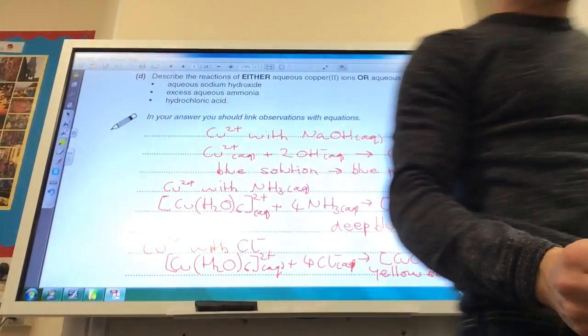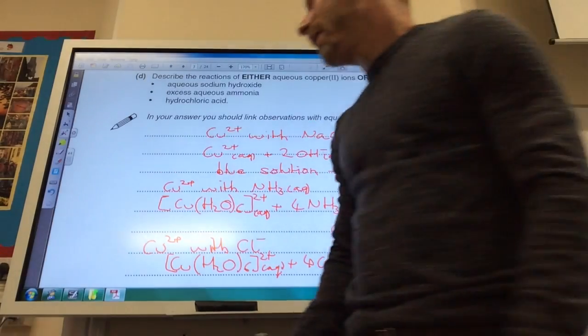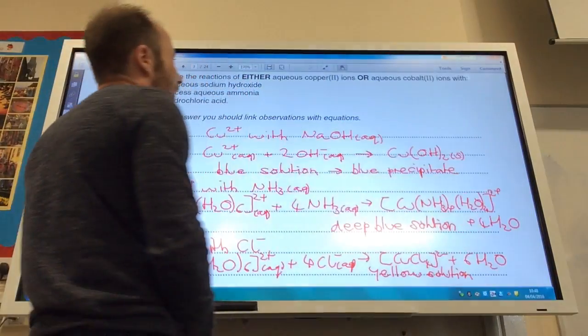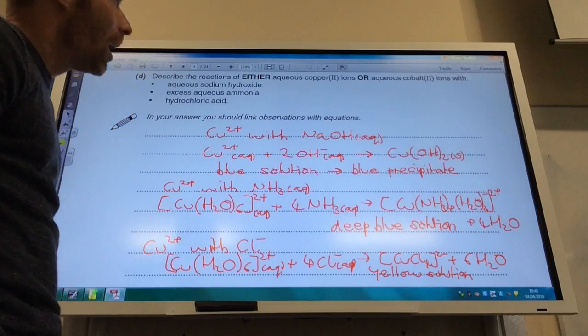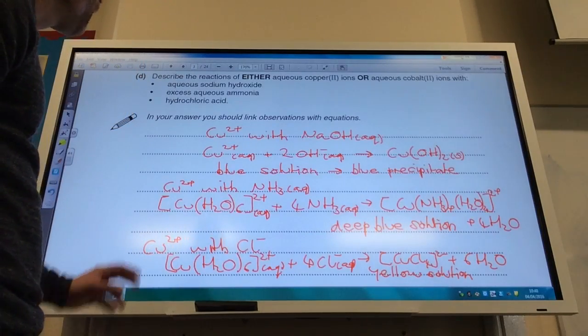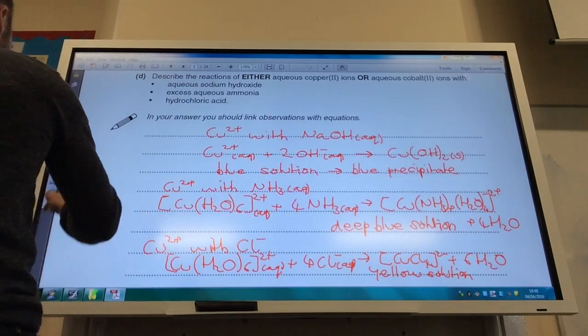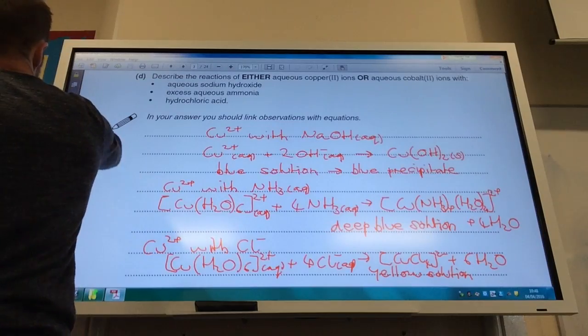So the next part is six marks. Tell me what you know about transition metal chemistry. It gives you the options. You can do copper 2 or cobalt 2. I've chosen to do copper. So first of all,